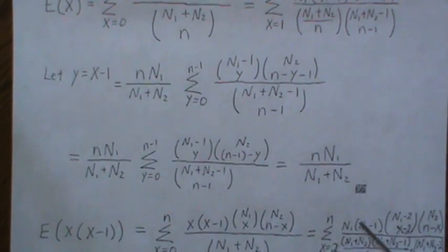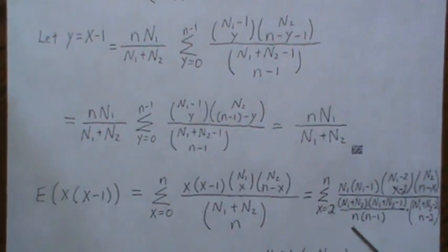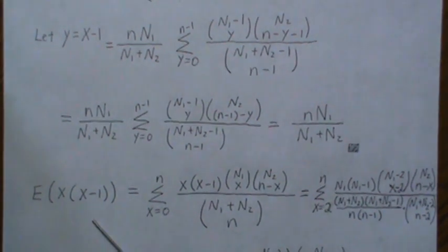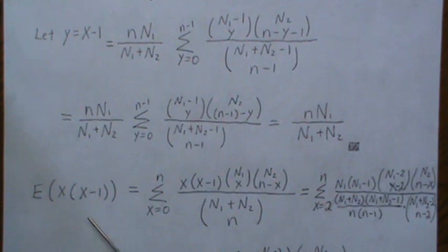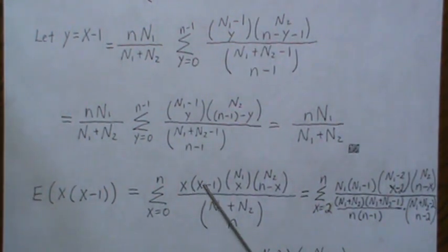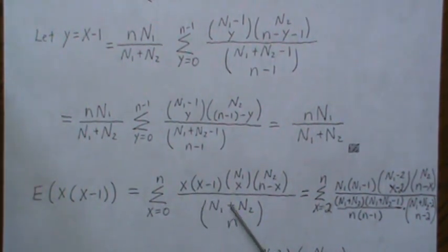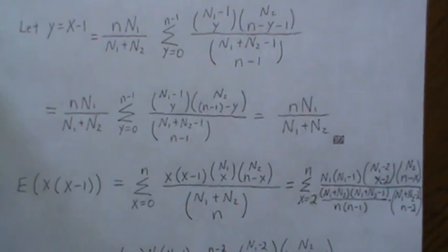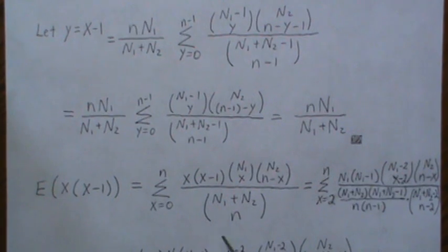Now, to calculate the variance, it's actually easier to calculate a second factorial moment. So it's a second factorial moment. That means put in an x times x minus 1 times the probability mass function summed over all possible values.